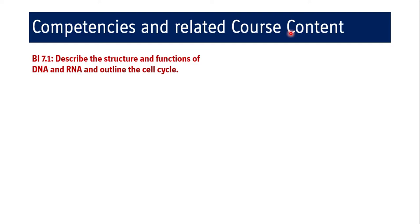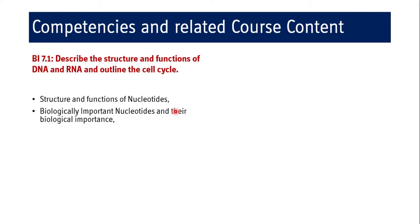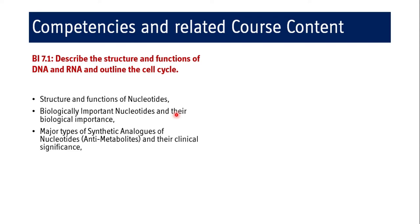In BI 7.1, the competency states: describe the structure and functions of DNA and RNA and outline the cell cycle. The related course content given by MUHS includes structure and function of nucleotides, biologically important nucleotides and their biological importance, major types of synthetic analogues of nucleotides used as anti-metabolites and their clinical significance, structure and function of DNA and RNA, and phases of the cell cycle.